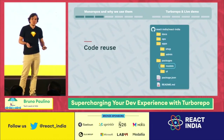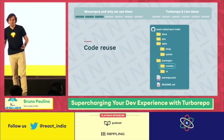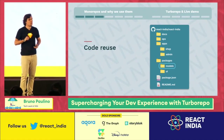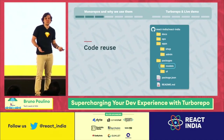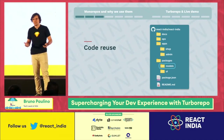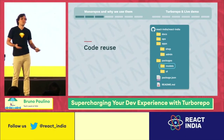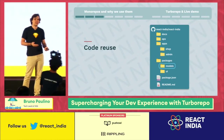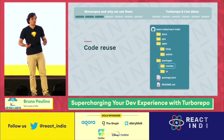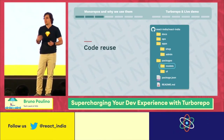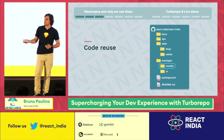One reason big companies invest in monorepos is code reuse — it's just so much easier to share code with your team. For example, in this demo I have a models package that shares database models. If you have two different apps that need those models, you can just reuse them across the same repo. If you're working in different codebases, you're probably duplicating that. You'd have to extract it into a library, publish it to NPM, version it — and then it becomes way more difficult to keep those teams in sync.